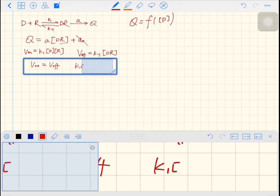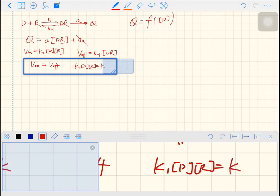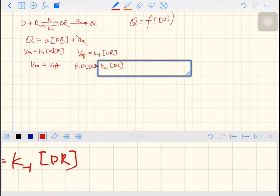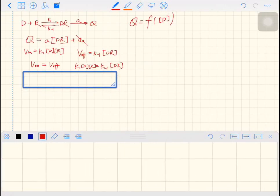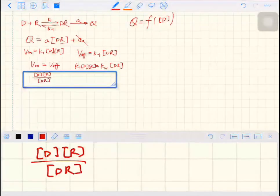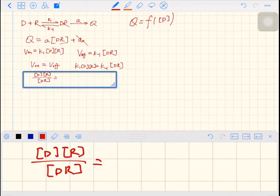Therefore, K1 DR is equal to K-1 DR. By rearranging it, you have DR over DR. And this is negative 1, K1.